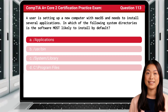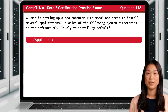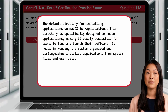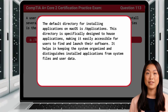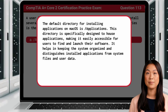The answer is A, /Applications. The default directory for installing applications on macOS is /Applications. This directory is specifically designed to house applications, making it easily accessible for users to find and launch their software. It helps in keeping the system organized and distinguishes installed applications from system files and user data.